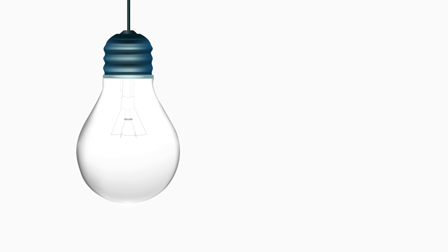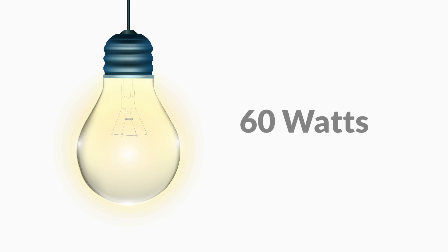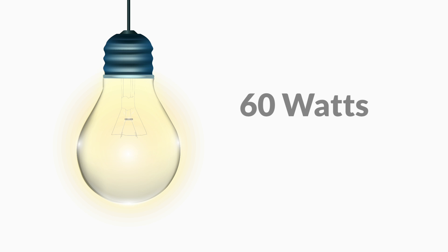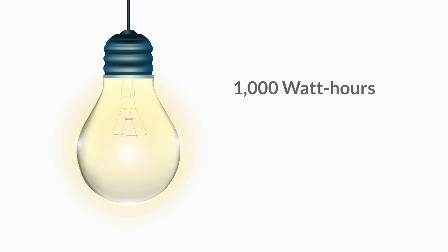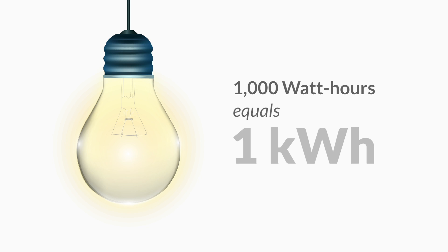Your average light bulb is 60 watts. If you turn on the light bulb for one hour, it will use 60 watts in that hour, or 60 watt hours. One thousand of those watt hours is equal to one kilowatt hour. So for roughly every 17 hours you leave that light bulb on, you'd use one kilowatt hour of electricity.